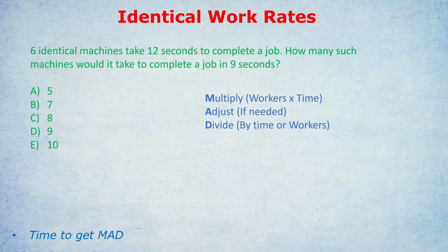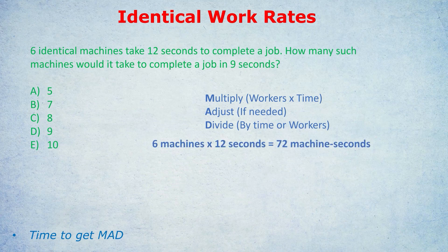What do we multiply in step one? We multiply the number of identical workers by the time they take to do a certain job. So we're multiplying workers times time. In this question we have six identical machines. Let's multiply those six machines by the time they took, which was 12 seconds. Six machines times 12 seconds equals 72 machine seconds. I do recommend writing out the units — if we multiply machines and seconds, we get machine seconds.